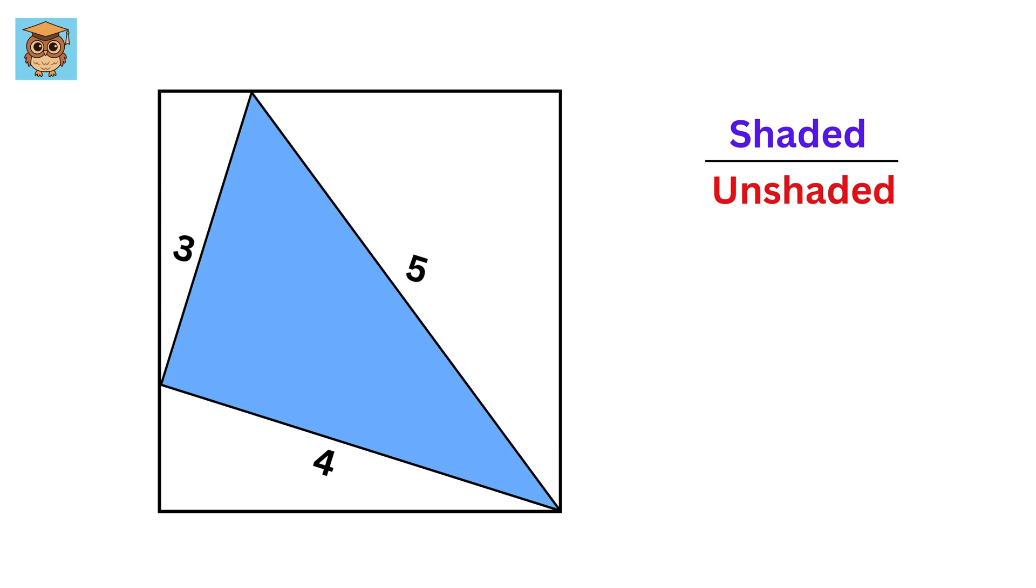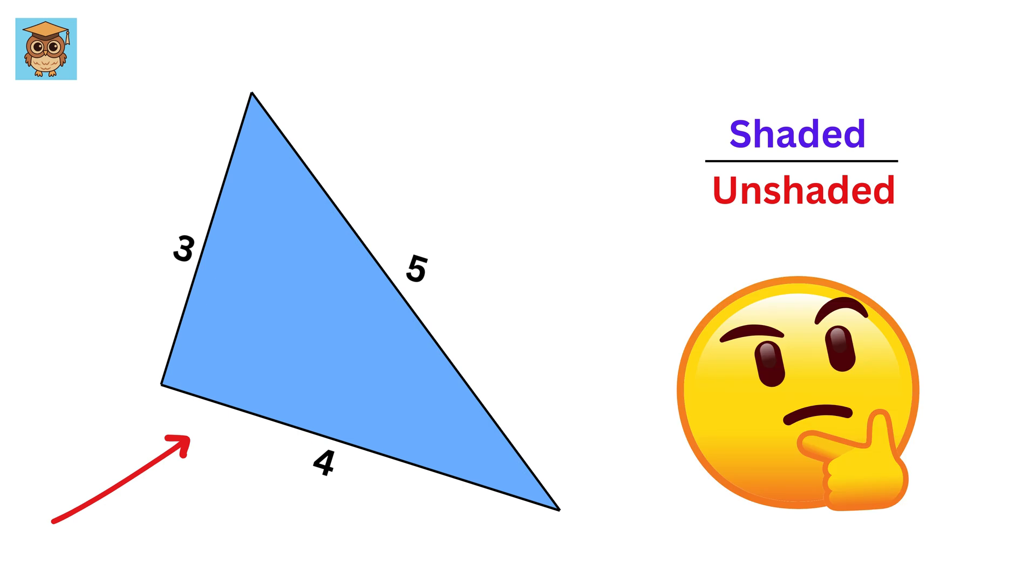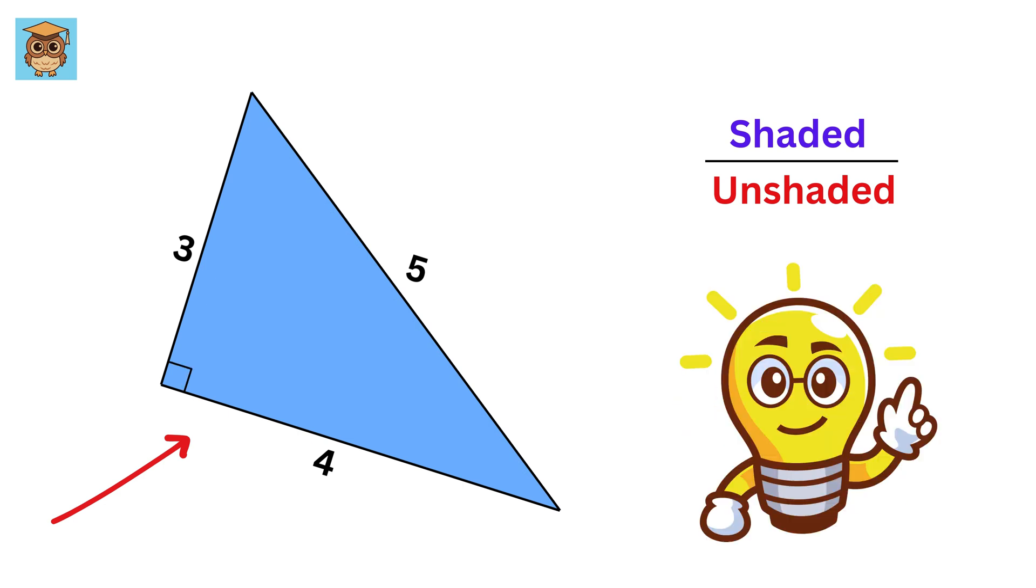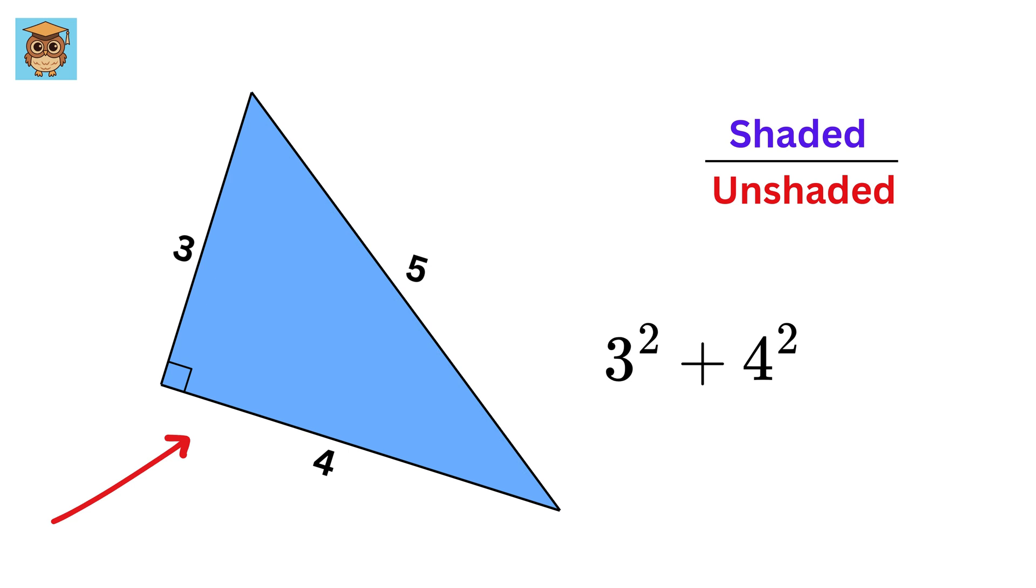Okay, to find this ratio, we need the area of the blue shaded region, which is the area of this triangle. This triangle is a three, four, five triangle. And what do we know about such a triangle? That's right! It is a right triangle because it follows the Pythagorean theorem. Three square plus four square equals five square. So, this angle will be the right angle.